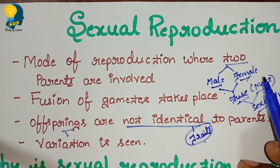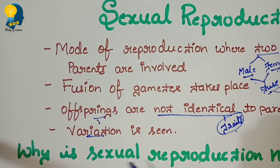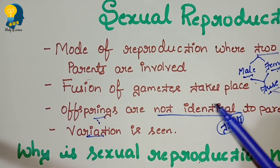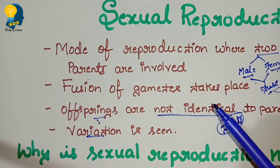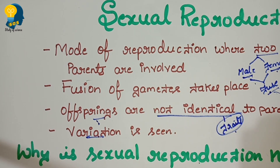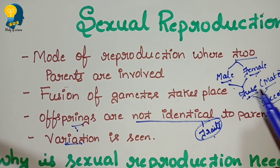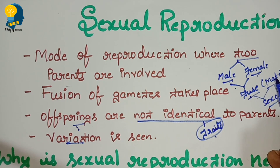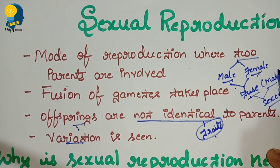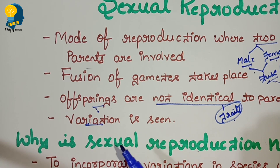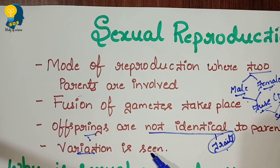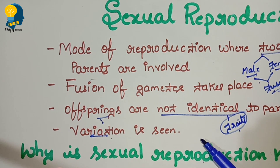Instead, they have some characteristics — we call them traits. They have some traits of the father as well as traits of the mother, but they are not completely the same as the father or mother. There is also some variation. The newly born organism will show some kind of variation — it may be a change in eye color, change in hair color, or change in skin color. This kind of variation is only seen when sexual reproduction takes place.